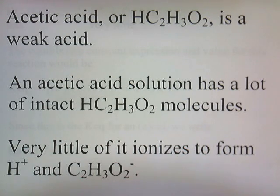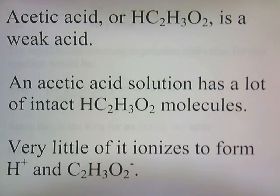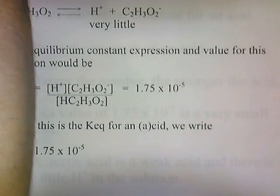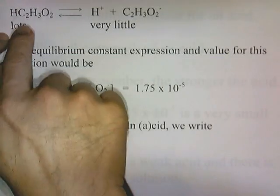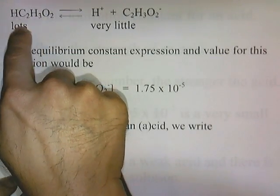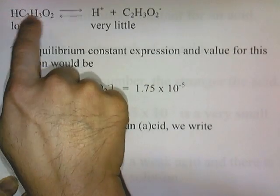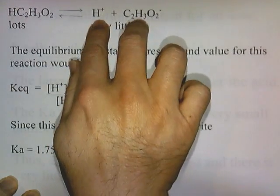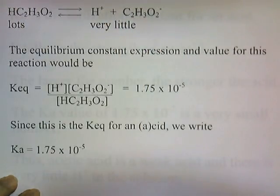An acetic acid solution has a lot of intact HC2H3O2 molecules. Very little of it ionizes to form hydrogen ion and acetate ion. So if you have acetic acid, you'll have a lot of these molecules, and very few will break apart. There's not going to be very much of this in solution, but there will be lots of this.